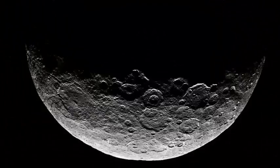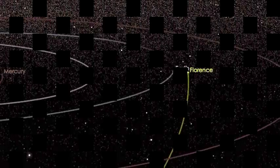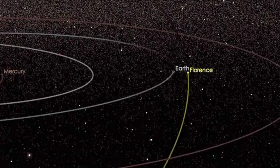Unfortunately, it will not be visible to the naked eye, but with a small telescope, astronomers can catch Florence several nights between late August and early September near the constellations of Capricornus and Aquarius.